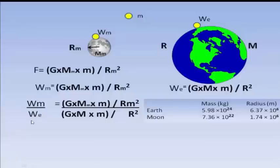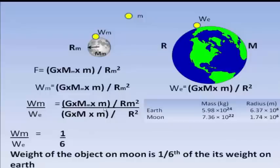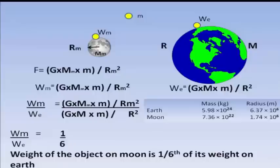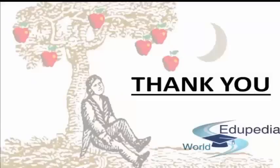The weight on the moon divided by its weight on the earth equals 1/6. This shows that the weight of an object on the moon is one sixth of its weight on the earth. So if a person weighs 60 kg on earth, on the moon they will weigh only 10 kg — one sixth of their weight on earth. This difference is because of the difference in the acceleration due to gravity. I hope you have understood the concept of free fall and the concept of mass and weight. Thank you for watching Edupedia World videos.